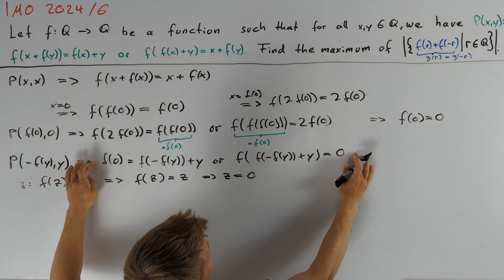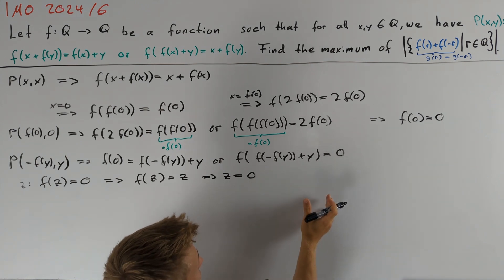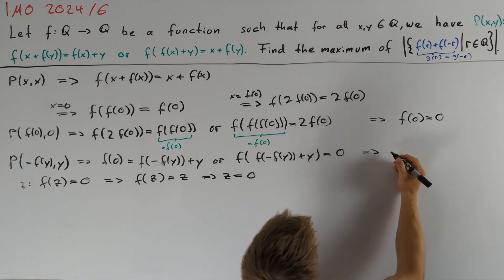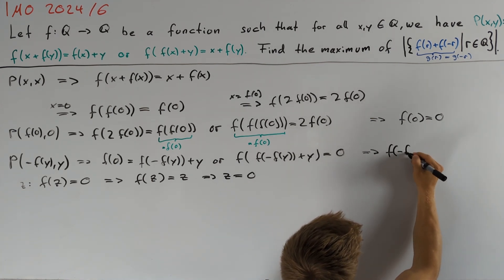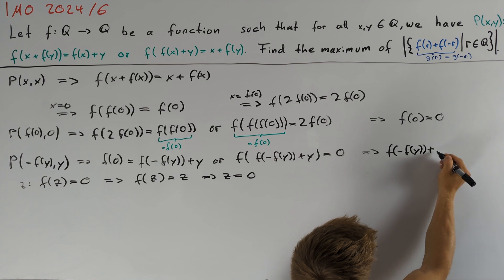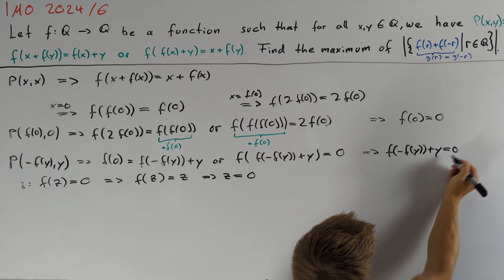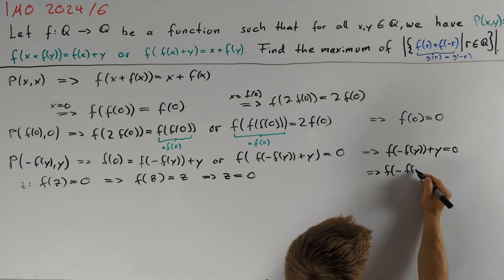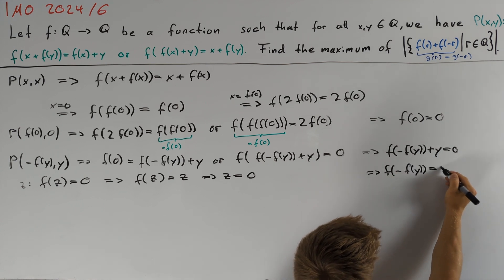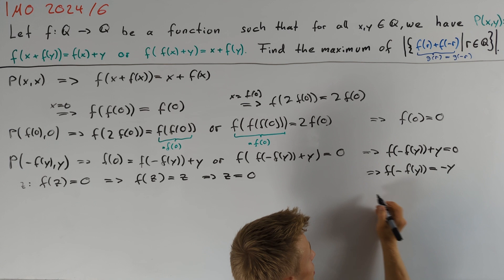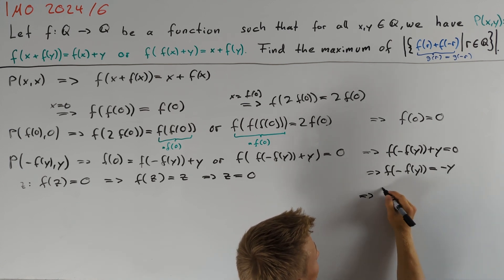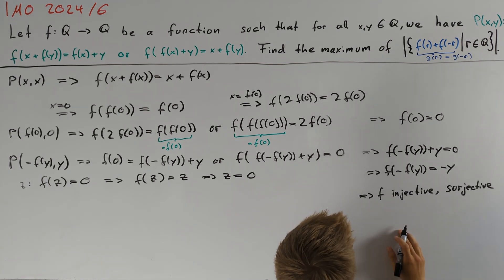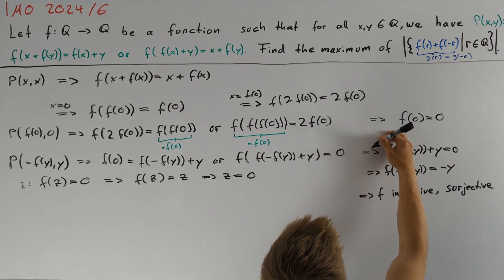In this line, the second equation also implies that the term is equal to 0. Therefore, we can conclude that f(-f(y) + y) = 0, or in other words, f(-f(y)) = -y.